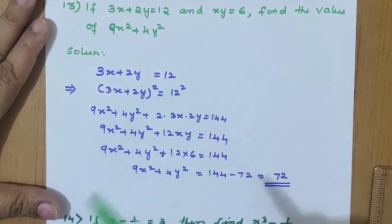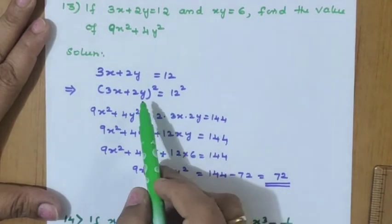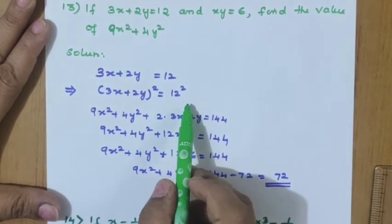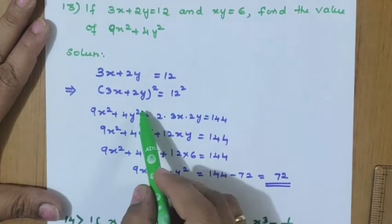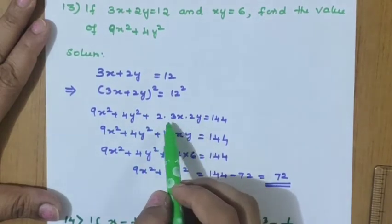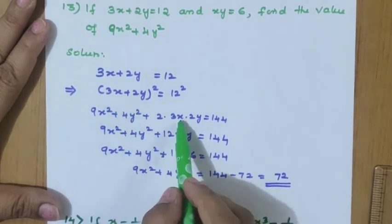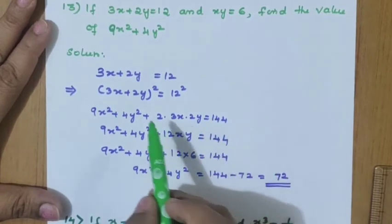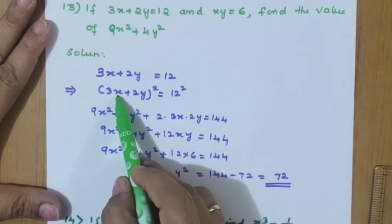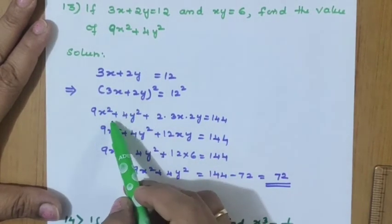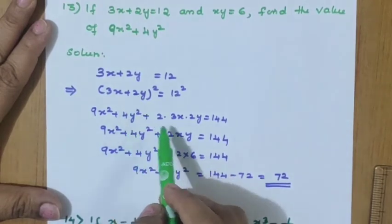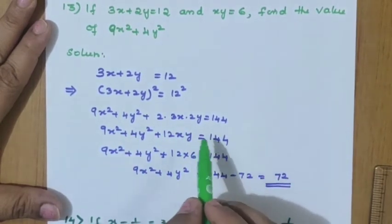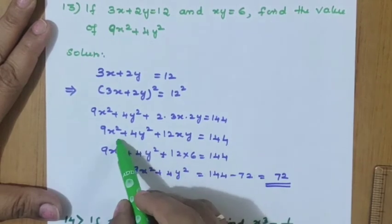3x plus 2y equals 12 is given, so squaring on both sides: (3x + 2y)² = 12². That is 9x² + 4y² — using a plus b whole square expansion — the middle term is 2 into 3x into 2y, equal to 144. So 3x whole square is a², 2y whole square is 4y², and this is the middle term 2ab.